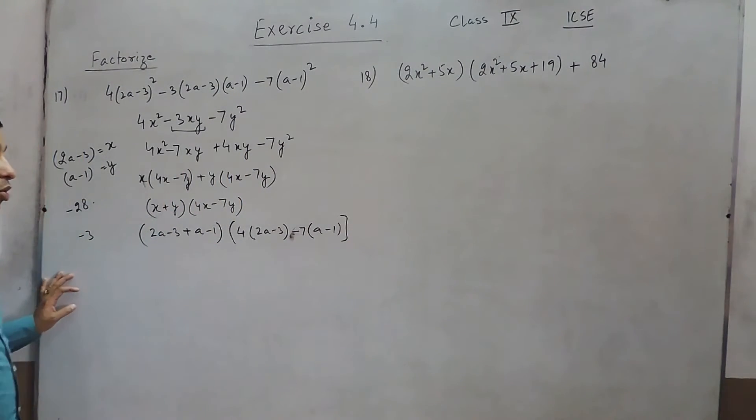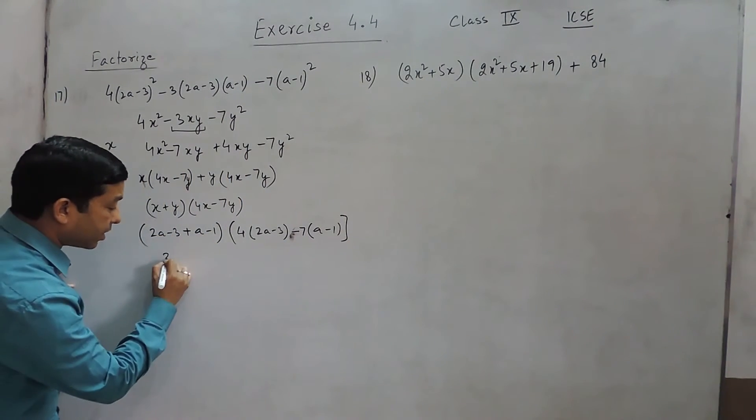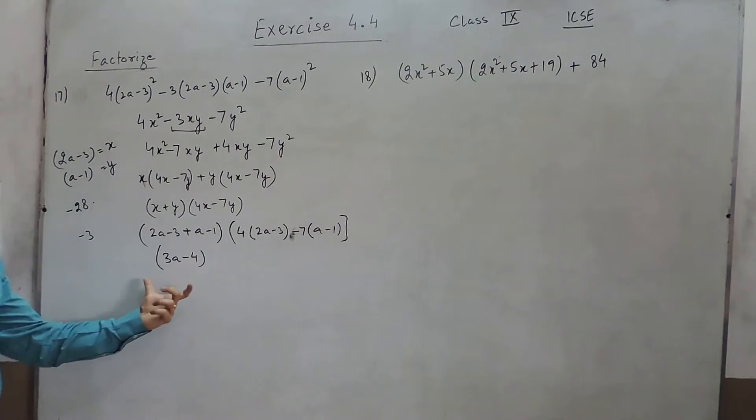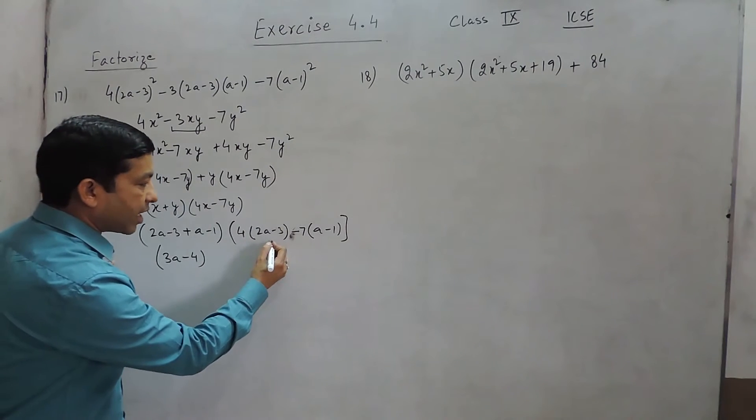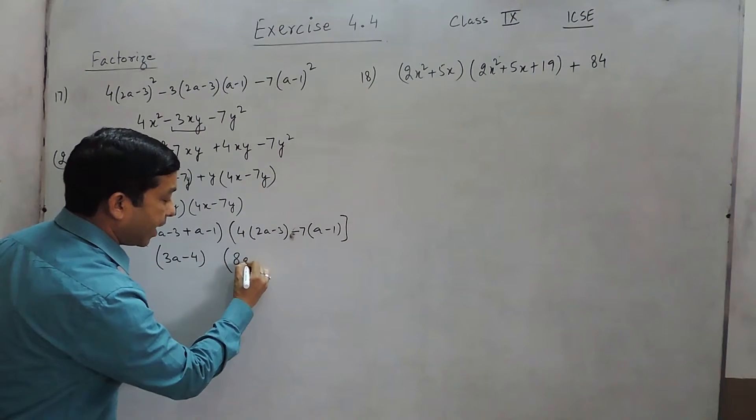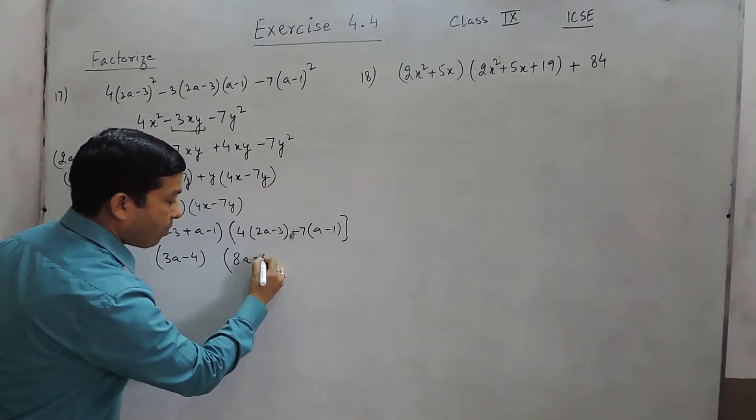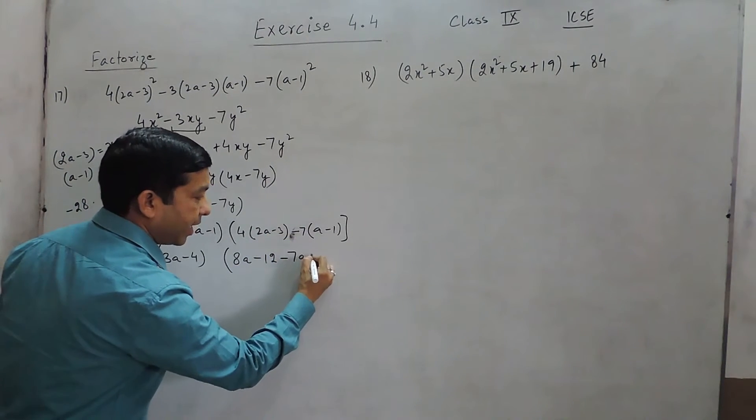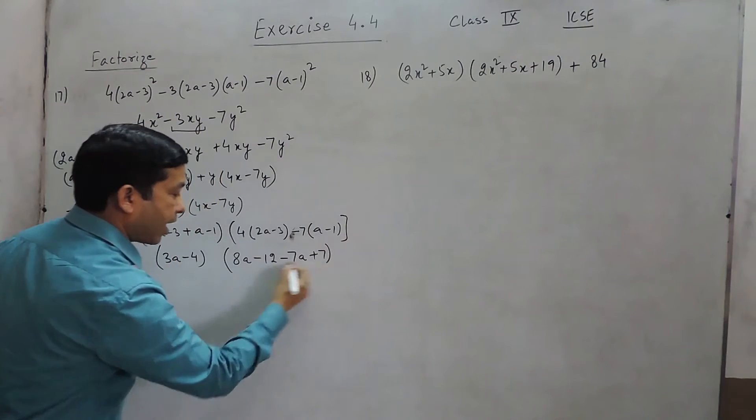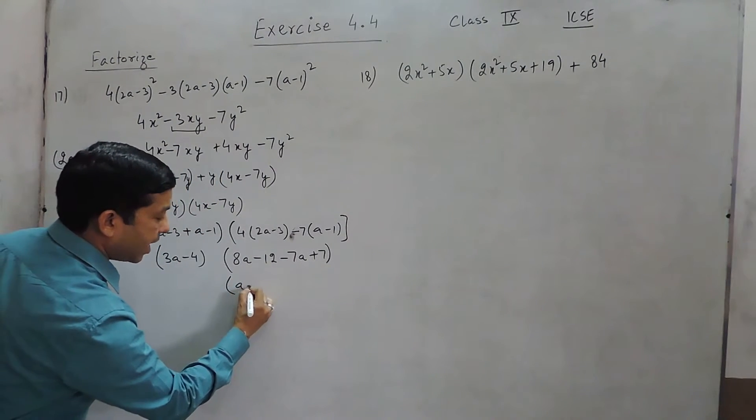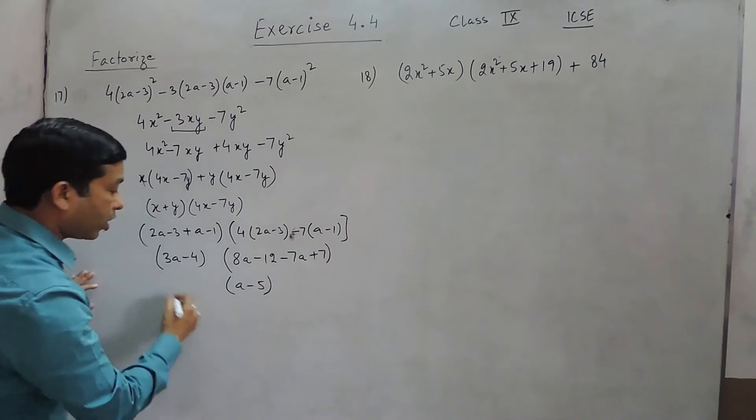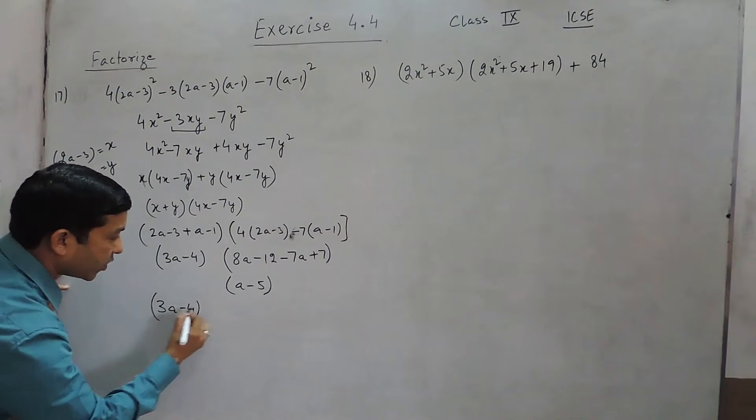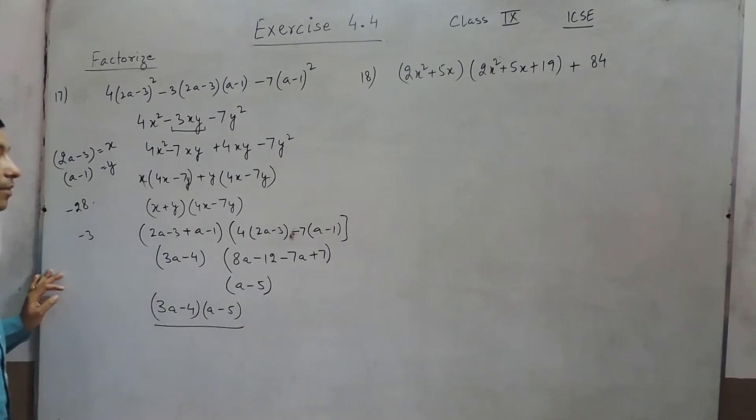Further we have to solve it. 2a plus a becomes 3a, minus 3 and minus 1 become minus 4. So 3a - 4 is the first factor. And the second factor becomes 8a - 12 - 7a + 7, which we can write as a - 5. So the two factors become (3a - 4) as the first factor and (a - 5) as the second factor.